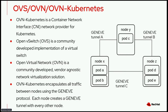OVN takes that logical view of the network and translates it into a configuration usable by OVS nodes on the cluster to enable the virtualized view of the network. The key point is that OVN-Kubernetes is the software that configures the network in an OpenShift cluster, and any traffic between nodes configured by OVN-Kubernetes is encapsulated with the GENEVE protocol. In this diagram, node X, node Y, and node Z each have a tunnel set up between them — all pod traffic is encapsulated over these GENEVE tunnels.